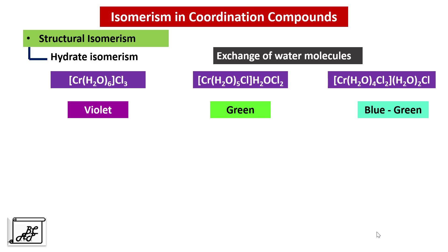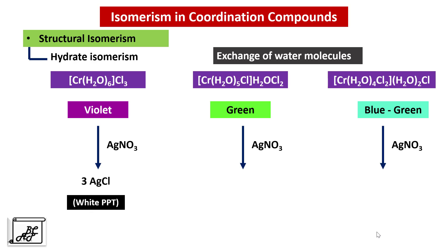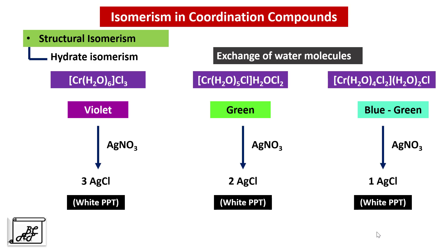When all three complexes are treated with silver nitrate solution, the first gives three molecules of AgCl, the second gives two molecules of AgCl, and the third gives one molecule of AgCl. All three complexes differ in the quantity of silver chloride formed, indicating different numbers of chloride ions outside the square bracket and different numbers of water molecules in the primary ionization sphere. This type is called Hydrate Isomerism.